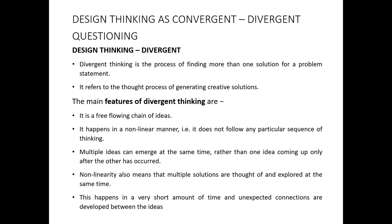We start with divergent thinking in design. Divergence means we are diverging or expanding towards a point. In thinking, divergent thinking is a process of finding out or generating a large number of ideas for a particular problem. Suppose we have a problem statement and many design team members sit together and generate a large number of ideas. These ideas are collected together without checking whether they are workable or not. We try to collect as many ideas as possible. Such a process is known as divergent thinking.